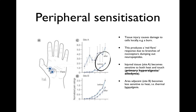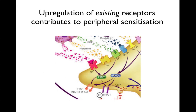The adjacent red flare area actually becomes less sensitive to heat — thermal hypoalgesia — which will become more relevant when we talk about modulation of pain. The area of primary hyperalgesia equates to peripheral sensitization, meaning increased sensitivity of the peripheral afferent nerves — the nociceptors. We've seen this picture before: one form of peripheral sensitization is via upregulation of existing receptors.